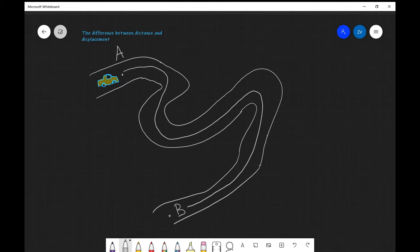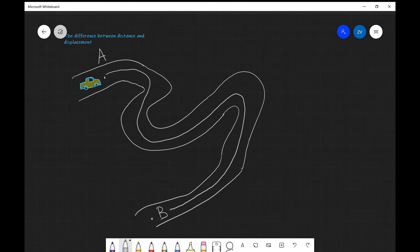Displacement on the other hand is different. It is the distance traveled in a particular direction. So displacement is actually a vector quantity.